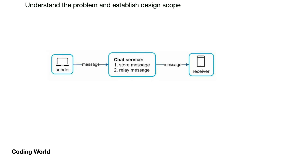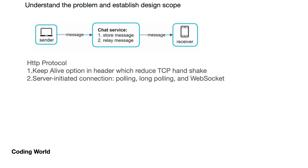Now jumping to high level design: there will be a sender, there will be a receiver, and in between there will be our chat service. The sender sends a message to the chat service, and the chat service relays that message to the receiver. This is the simple high level design. Now we will dig deeper and understand each concept at a deeper level.